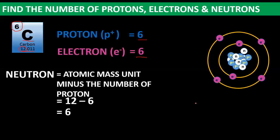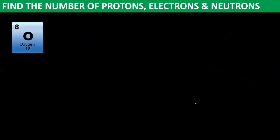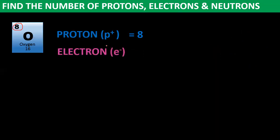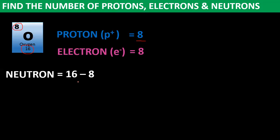Let's try element oxygen. The atomic number of oxygen is 8. Since protons equal the atomic number, oxygen has 8 protons. Electrons equal the number of protons, so oxygen also has 8 electrons. For neutrons: the atomic mass of oxygen is 16, minus the number of protons which is 8. So neutrons = 16 minus 8 = 8.